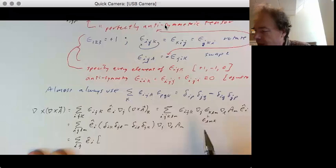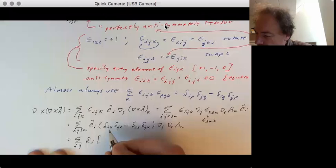So i goes with l, j goes with m. So this is l, m. This is m, l. There we go.